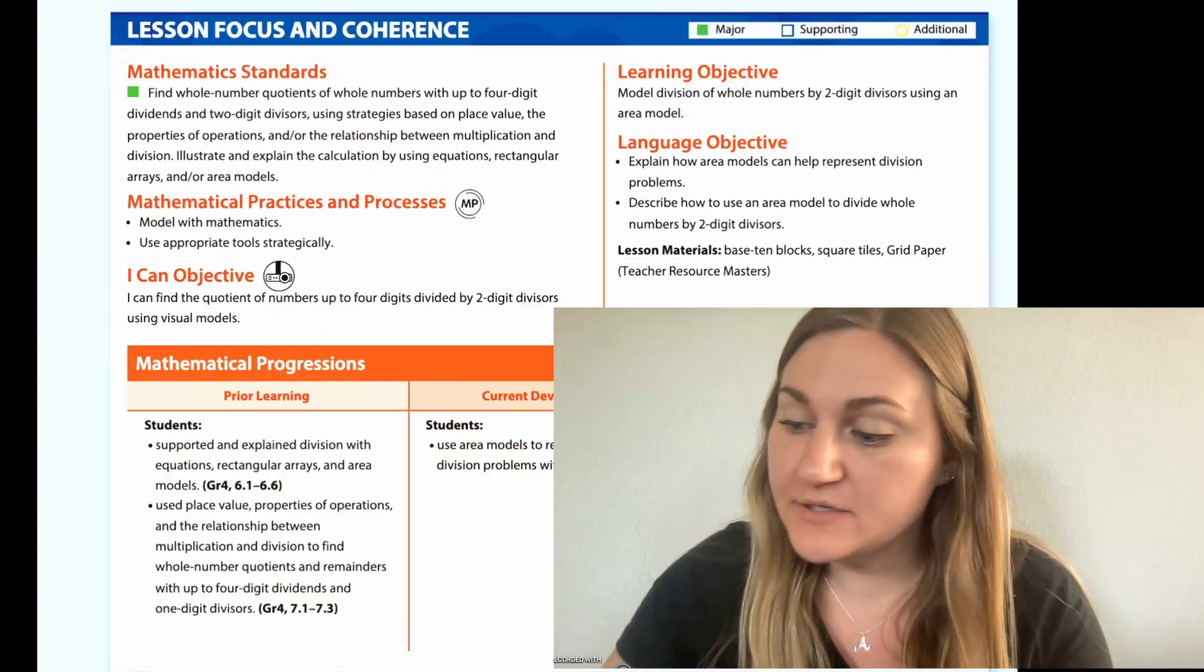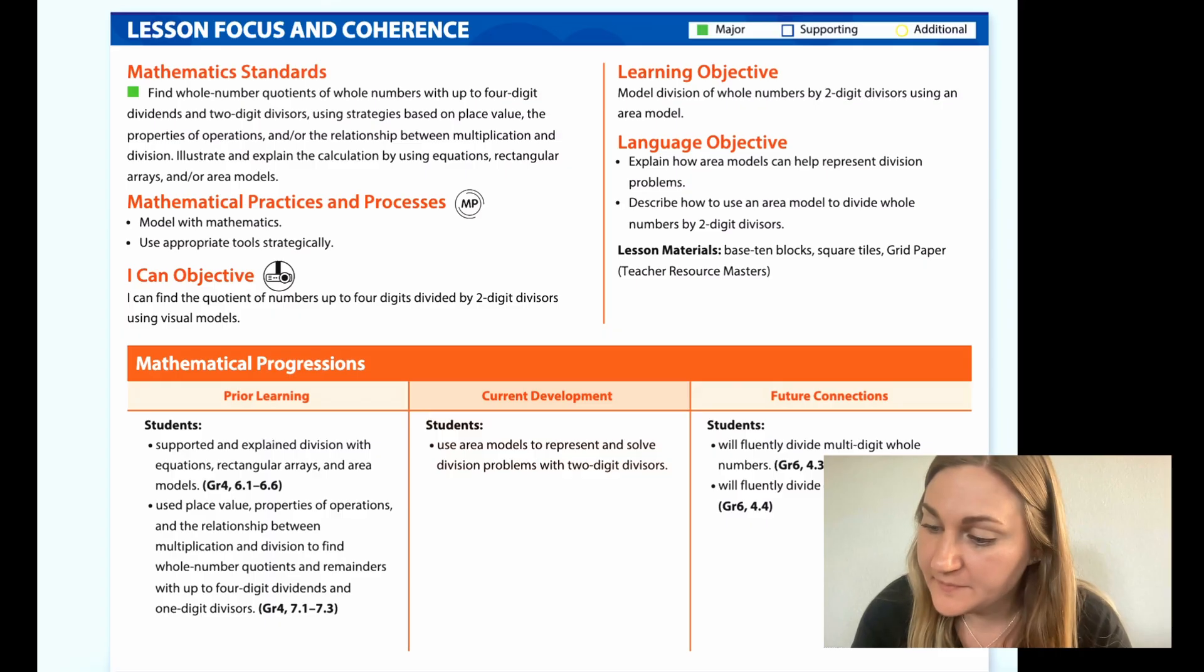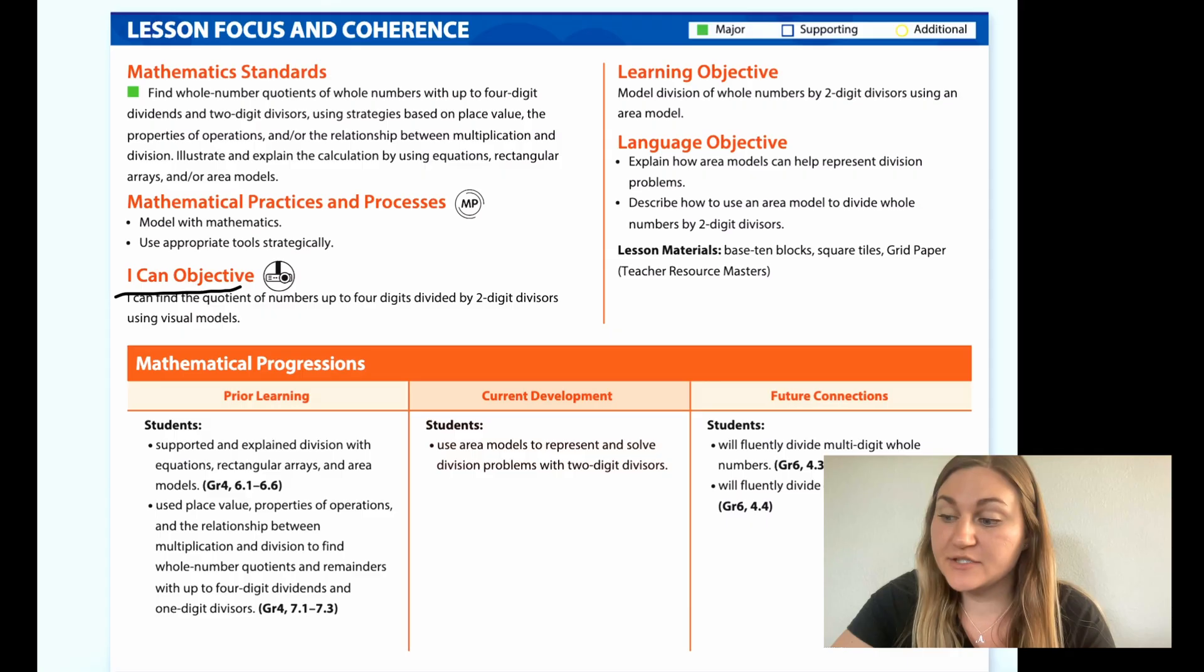Hi, I'm Natalie Rhodes and this is IntoMath's 5th grade, Module 2, Lesson 2. I'm going to start off with the I can objective. It says I can find the quotient of numbers up to four digits divided by two-digit divisors using visual models.